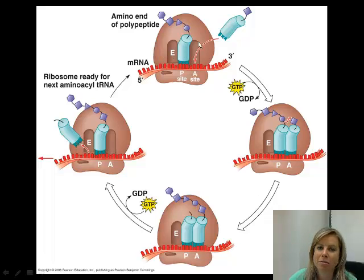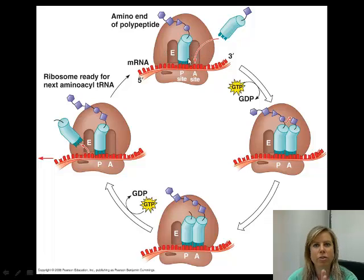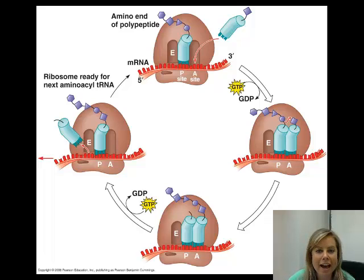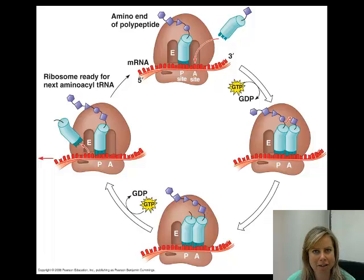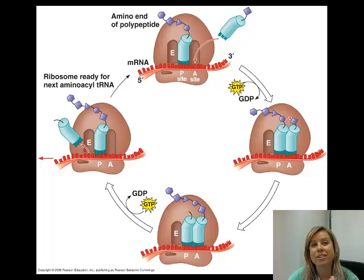Basically, the ribosome is just moving three nucleotides at a time down the messenger RNA. Every time a tRNA clicks in, you're making this long chain one amino acid longer. If we have a long chain of amino acids, that's called a polypeptide. And if we fold the polypeptide into its shape, it makes a protein. This is how we actually form proteins from the code in your DNA.